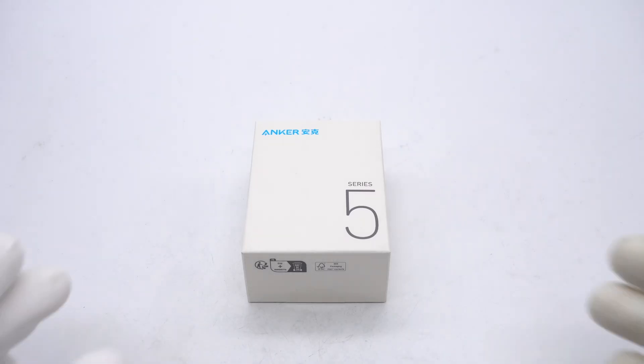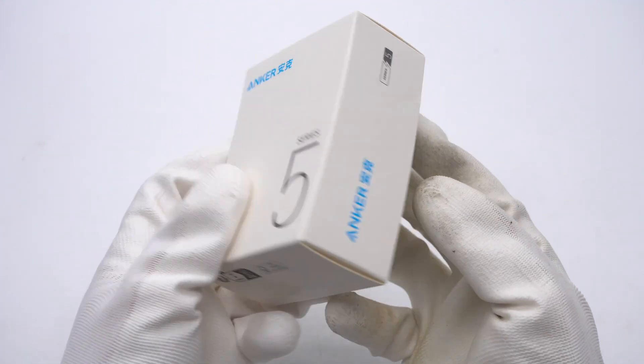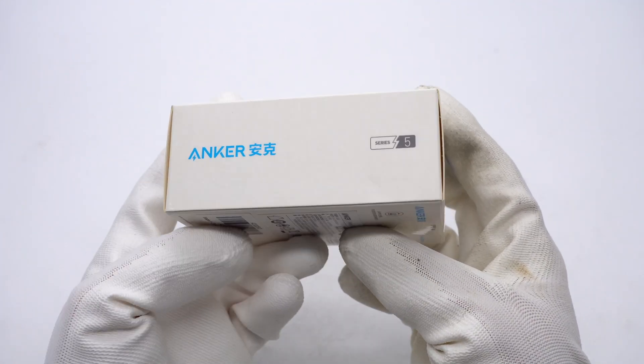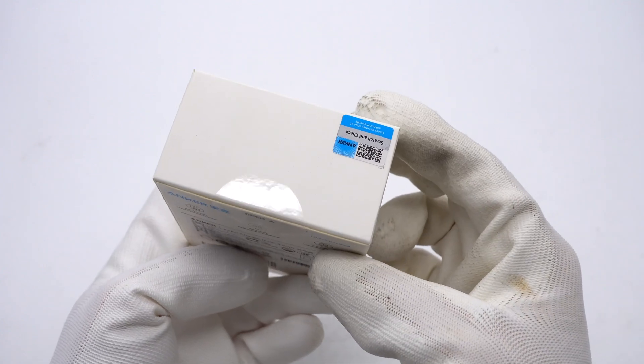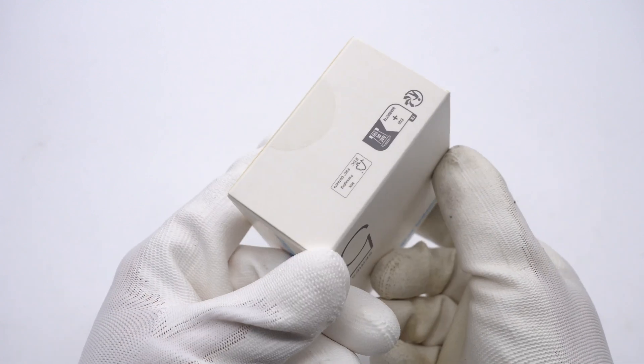This time, ChargerLab got a 3-in-1 GAN charger from Anker. It comes with a USB-A, two USB-C ports and foldable prongs. And it can support a charging power of up to 65W even in its small size. To know how it does that, let's take it apart to see the internal components.